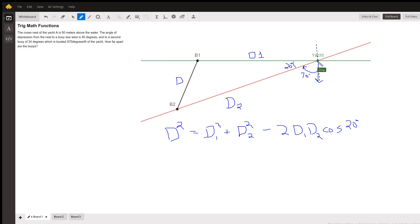And so if you imagine this crow's nest up here like this, 50 feet above, and this is like a pencil coming up out of your paper. And so we're drawing a right triangle to buoy one, and the angle of depression is 40 degrees to buoy one. So this must be a 50.